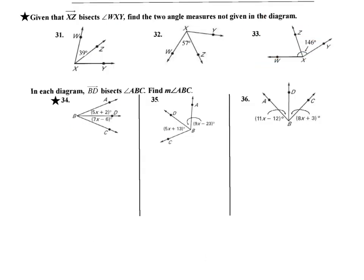All right, we're going to unpause here. And we're going to look at this next check portion here. It says given that xz bisects angle Wxy. Find the two angle measures not given in the diagram. So the first thing that we need to figure out is what is Wxy.